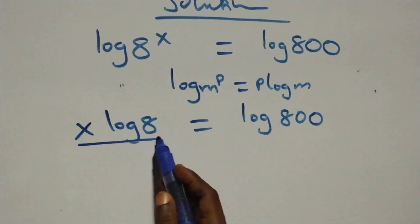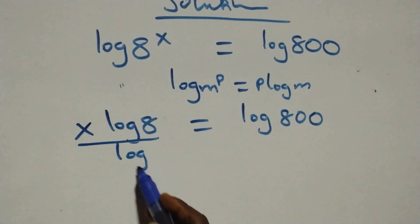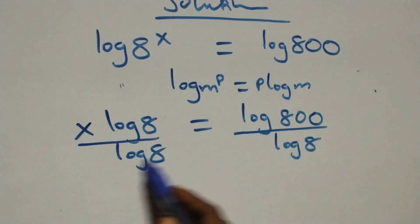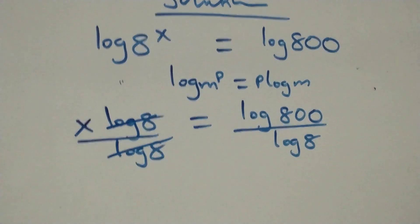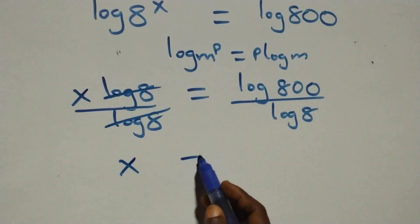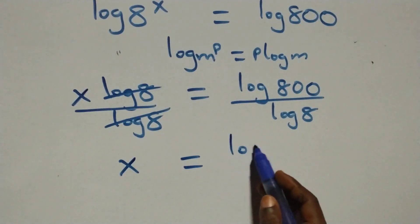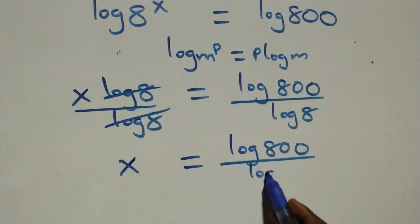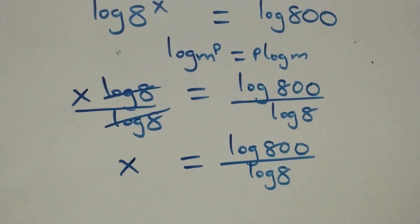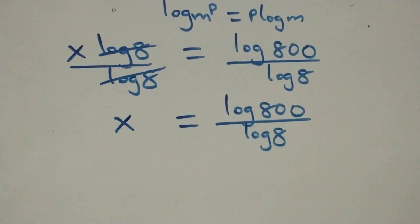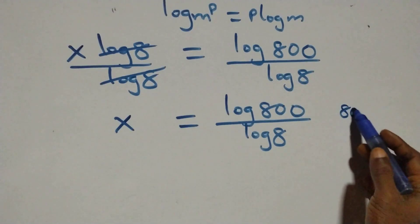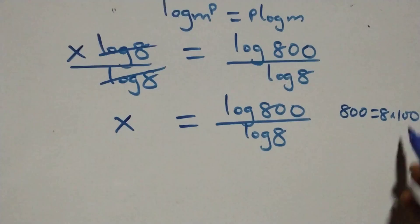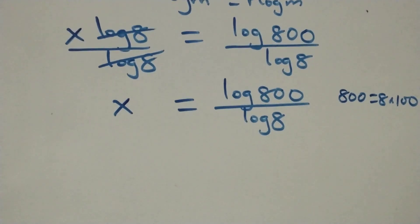The next step is to divide both sides by log 8. Log 8 cancels on the left, and we have x equals log 800 over log 8. We can also write 800 as 8 times 100.